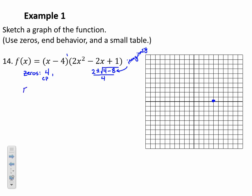For end behavior of number 14, the leading term is 2x³ — positive with odd degree — so the graph rises to the right and falls to the left. With only one x-intercept visible, we need a table of values to understand how the graph bends in between.